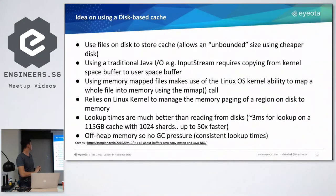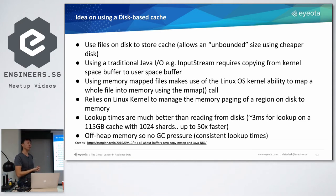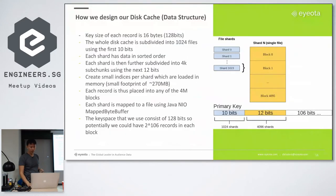This idea of using a disk-based cache allows us to have an unbounded size. Instead of traditional IO input stream, we use Linux memory map to do the mapping from files to memory — giving us the speed advantage of memory access even though we are reading from disk. Lookup times are much better than reading from disk directly. We benchmarked about 3 milliseconds for a lookup on a 115 gigabyte cache with 124 shards, which is about 50 times faster than a traditional lookup. The other advantage is this memory access is off-heap, so there's no GC pressure, and lookup times are quite consistent.